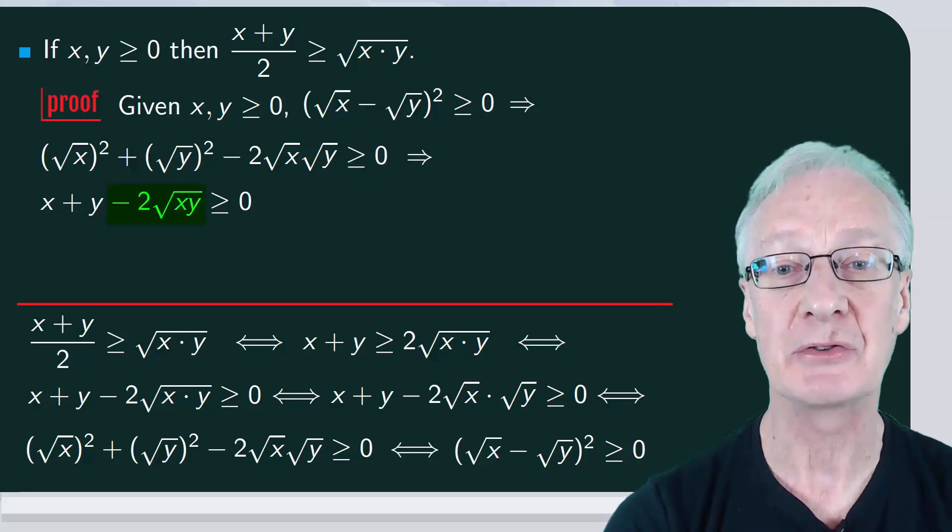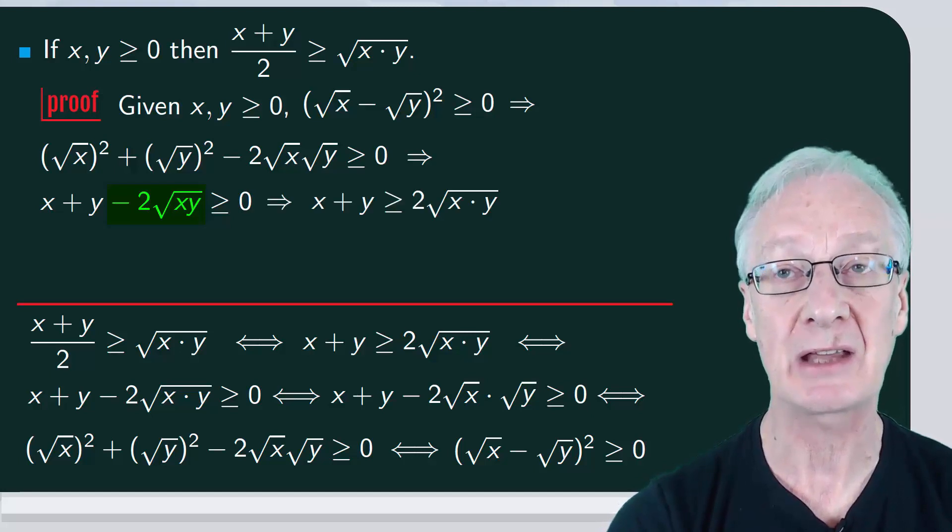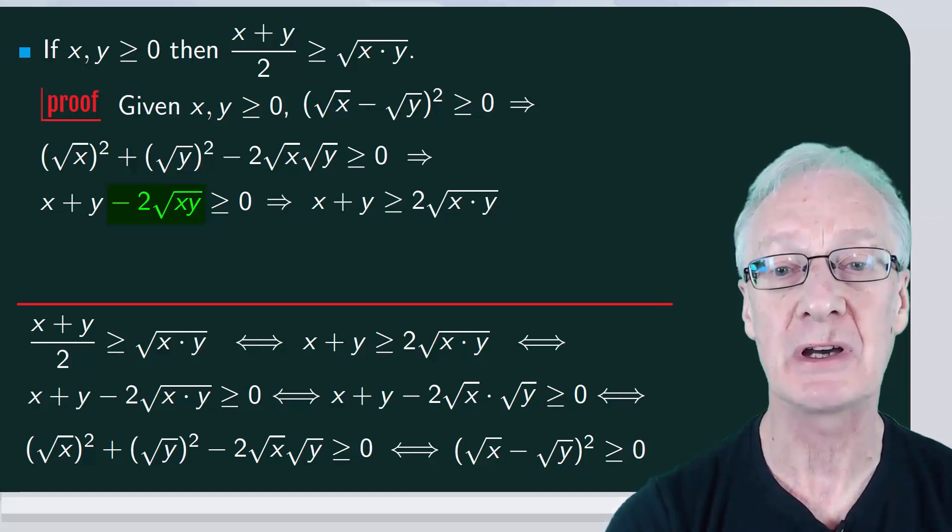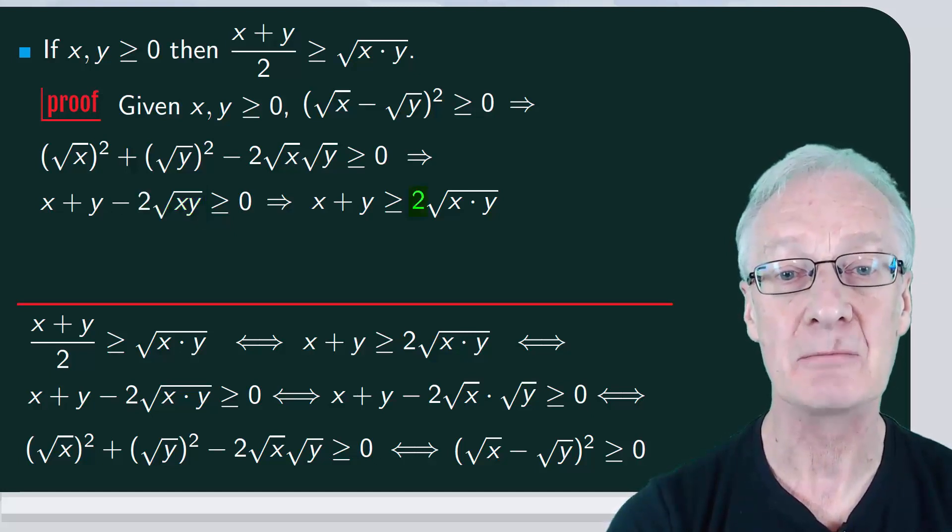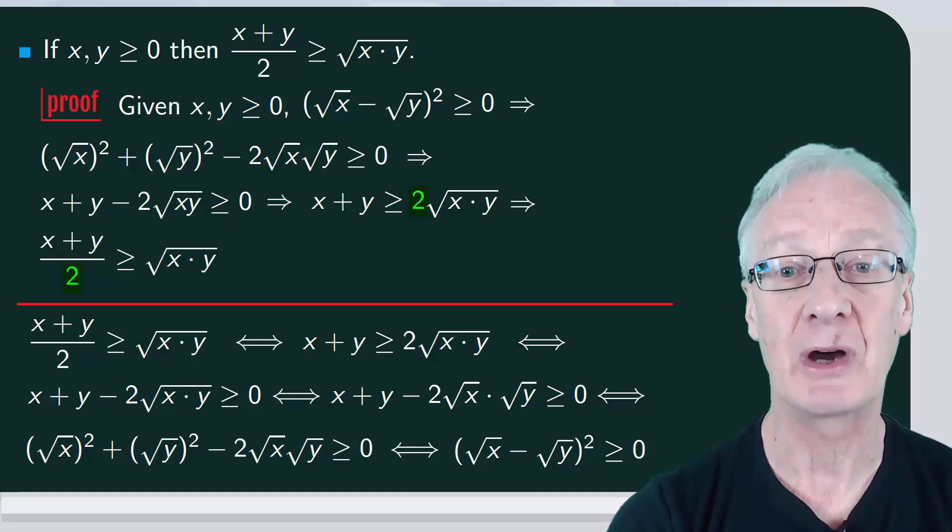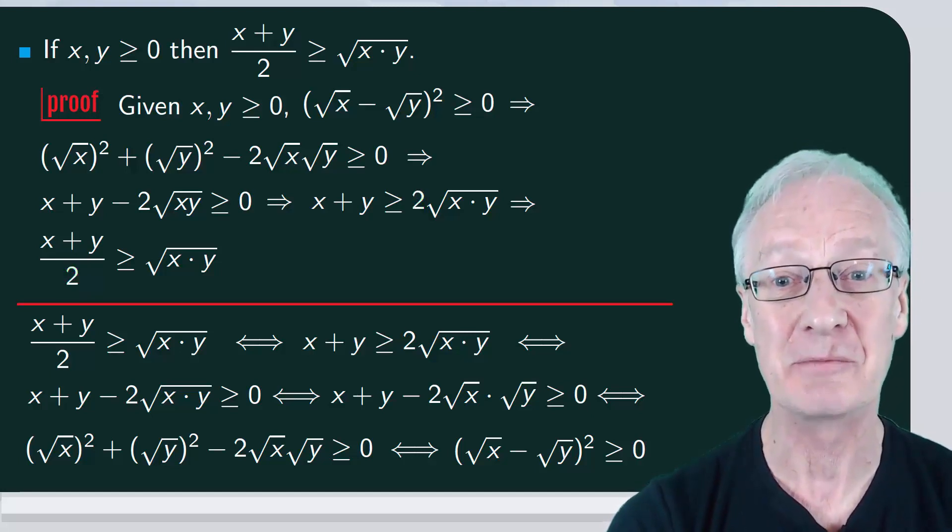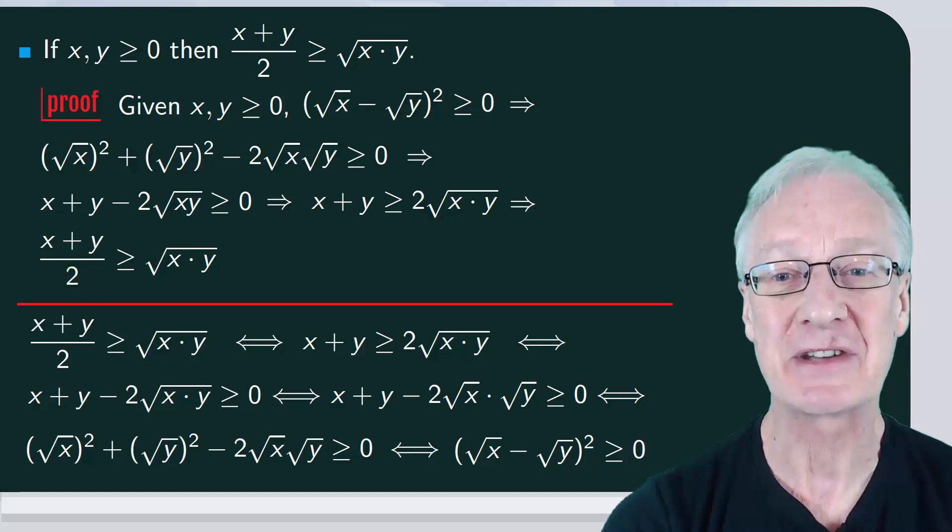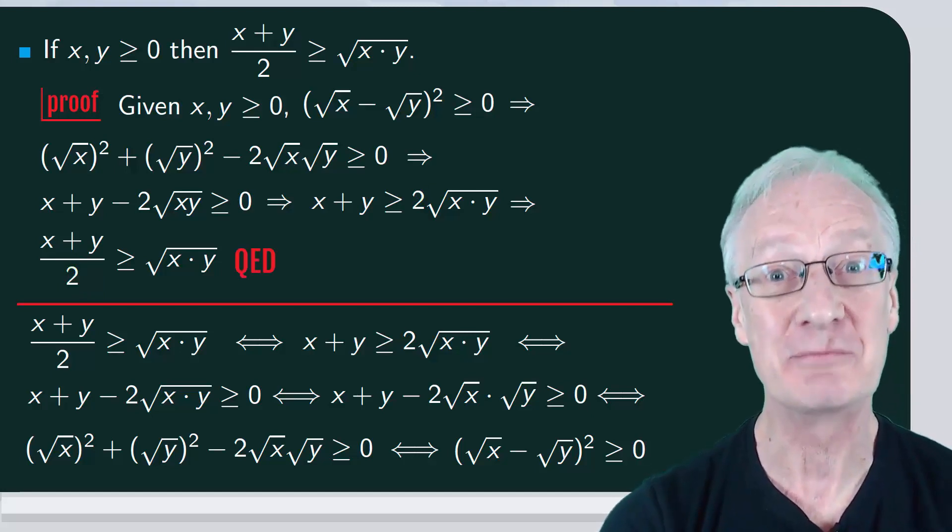Then we move this last element to the right and obtain that x plus y is greater than or equal to two times the square root of x times y. Moving the two to the other side, we arrive at x plus y divided by two is greater than or equal to the square root of x times y. And then comes the best of it because we can then say, and this is what we wanted to prove.